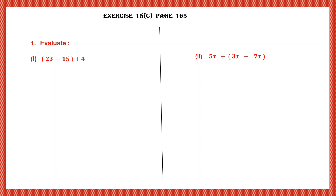There are simple rules to follow. First thing you need to remember is BODMAS - the rule of BODMAS. What does this mean? It means that if you have an expression that has many operations - suppose you have brackets and addition and subtraction and many operations - which one should we do first? BODMAS will tell us the order. The first thing you need to do is open brackets.